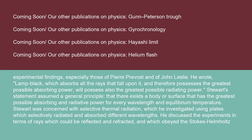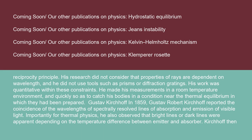Stuart's statement assumed a general principle: that there exists a body or surface that has the greatest possible absorbing and radiative power for every wavelength and equilibrium temperature. Stuart was concerned with selective thermal radiation, which he investigated using plates which selectively radiated and absorbed different wavelengths. He discussed the experiments in terms of rays which could be reflected and refracted and which obeyed the Stokes-Helmholtz reciprocity principle. His research did not consider that properties of rays are dependent on wavelength, and he did not use tools such as prisms or diffraction gratings.